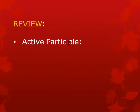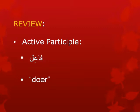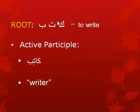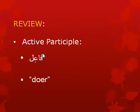So remember, what was an active participle? The active participle was the fa'il, and it referred to the doer, or someone who was in the state of doing something. Let's take an example — one of our favorites: kataba, to write. You remember the active participle, katib, which is a writer. All we did was plug kataba into the place of fa'il, and fa'il became katib — doer became writer.